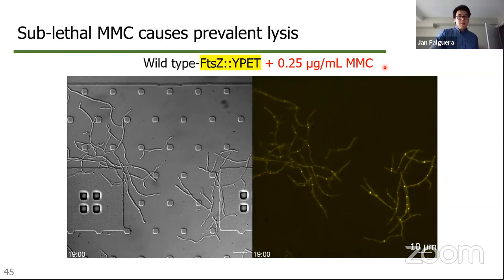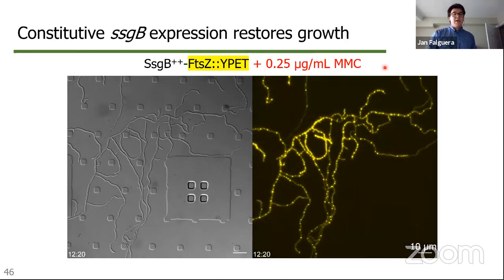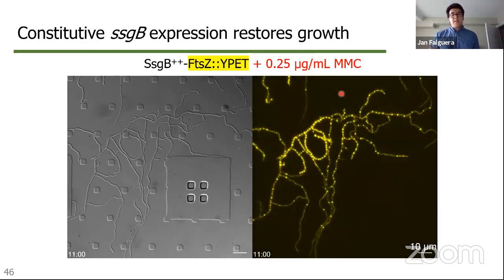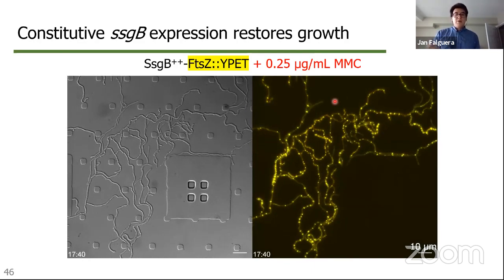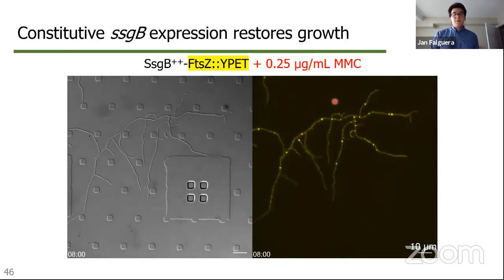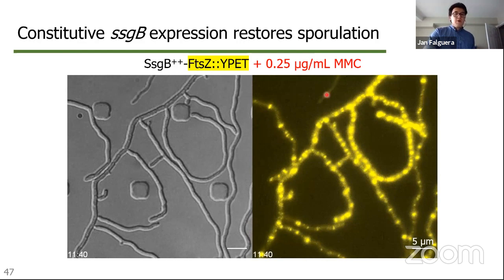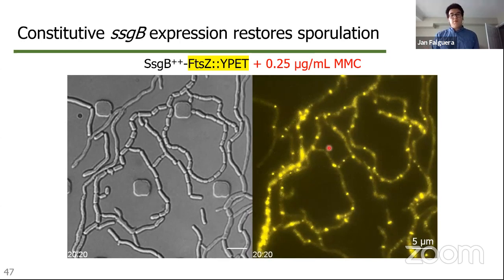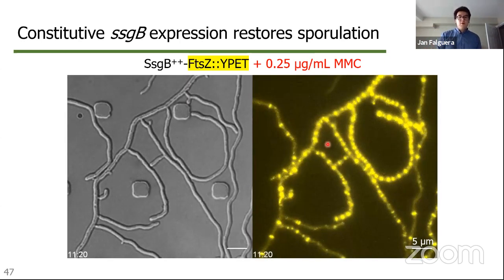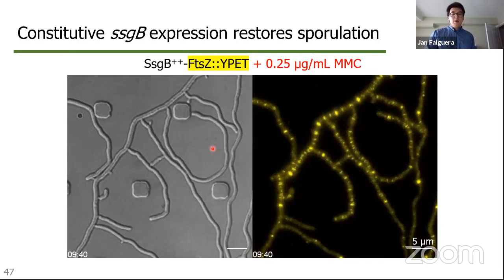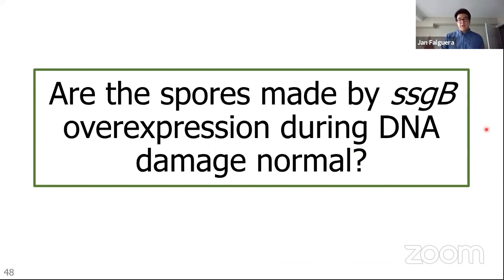We then compared this to a strain overexpressing SSGB, expressing fluorescent FtsZ and grown in the presence of DNA damage. We made two really interesting observations. Despite being grown in the presence of DNA damage, the SSGB overexpression hyphae are growing and extending quite nicely with much less lysis compared to the wild type. More significantly, despite growing these cells in the presence of DNA damage, you do in fact see the resumption of spore formation. You can see the rapid formation of Z-ring ladders in the fluorescent channel, and on the DIC channel the compartmentalization of hyphae into individual spore particles.